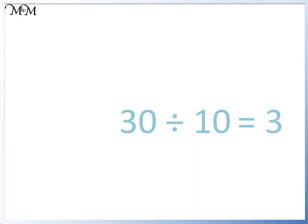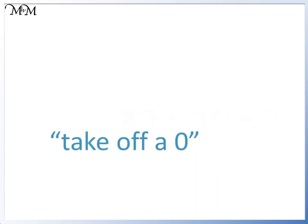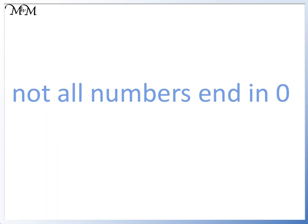A trick you may have learned is to take off a zero. This does work for numbers ending in at least one zero, but not all numbers end in zero. So to know what to do with numbers that don't end in zero, we need to understand what's actually happening when we take off a zero.